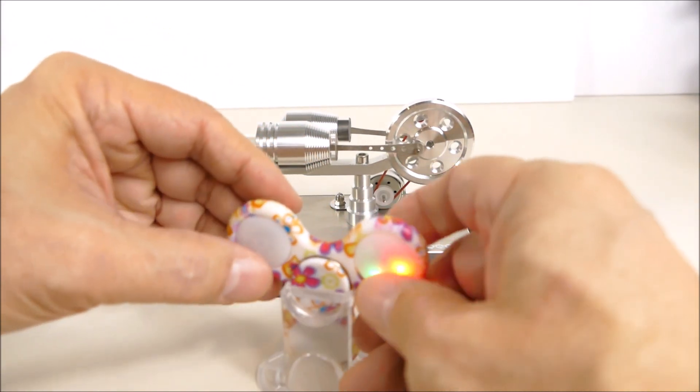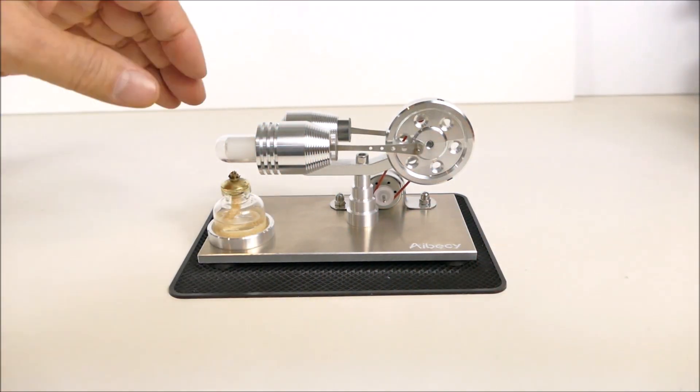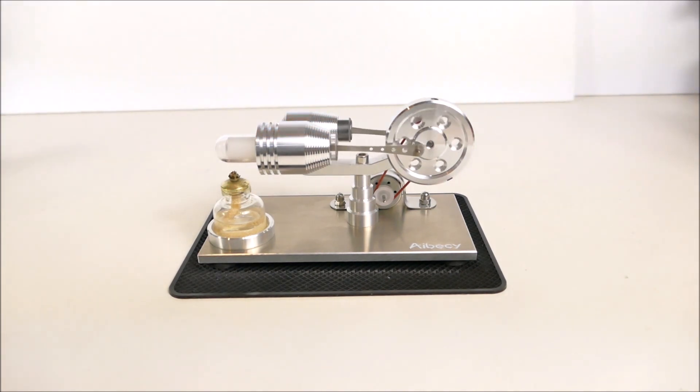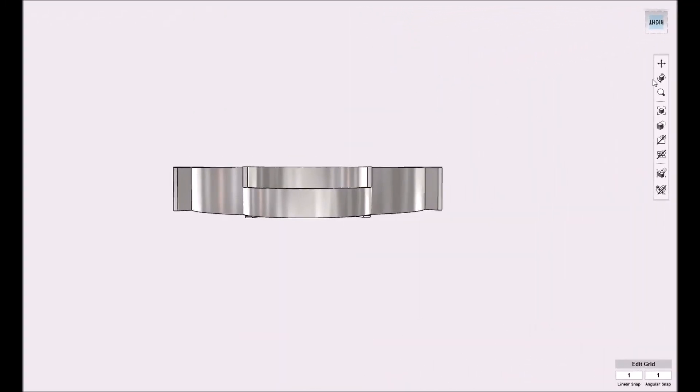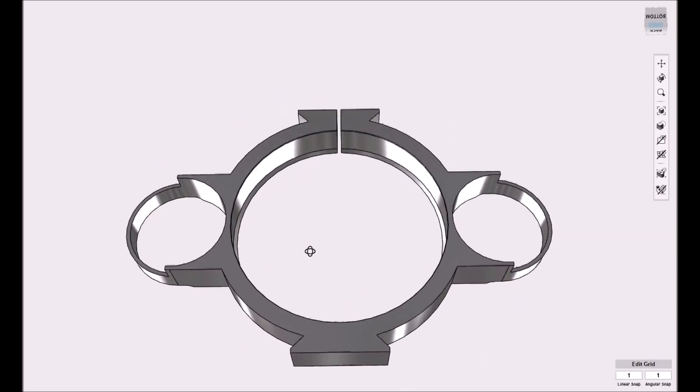So what I want to do is put some of these on the flywheel of this Stirling engine and see if that doesn't look like a nice persistence of vision display. I designed this little bracket to hold the LED pucks and snap this together onto the flywheel.